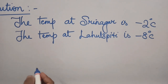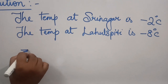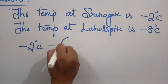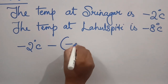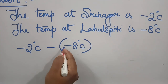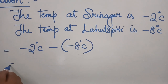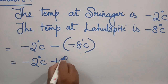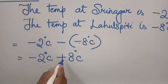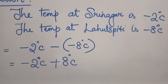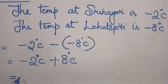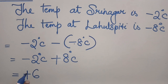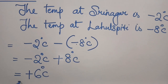So you have to find the difference between them. It's minus 2 degrees Celsius minus minus 8 degrees Celsius. That equals minus 2 degrees Celsius plus 8 degrees Celsius. The signs are different, so you subtract: 8 minus 2 is 6, and the bigger number has a plus sign, so the answer is 6 degrees Celsius.